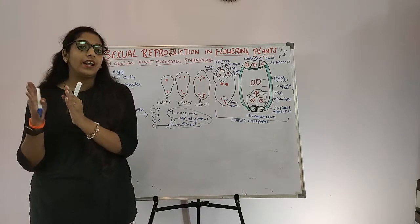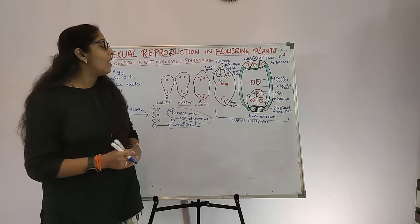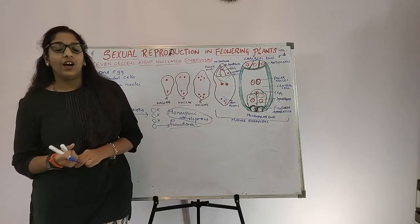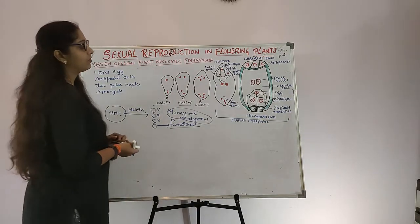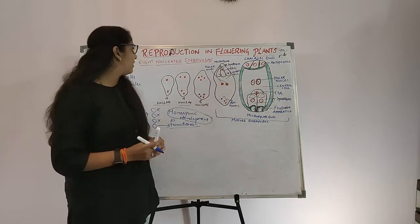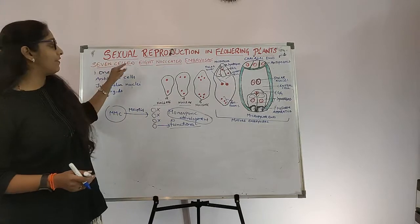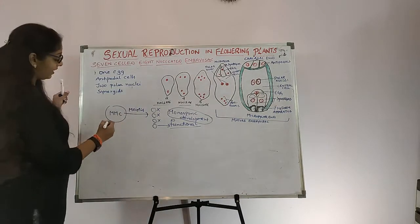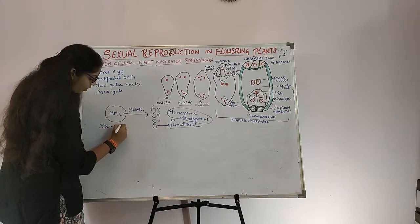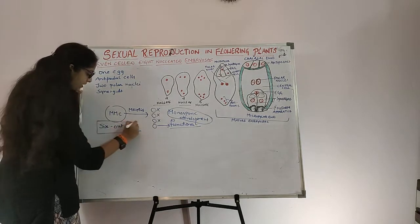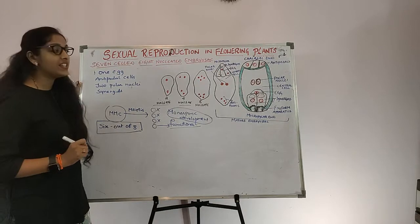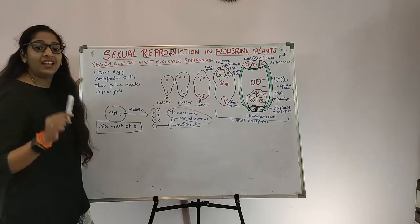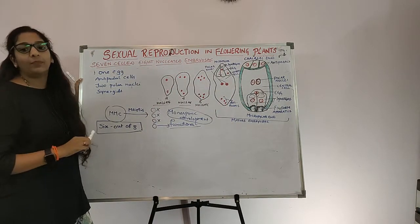This is how the mature embryo sac is formed. Now let us study its structure in detail. The embryo sac is 8-nucleate and 7-celled. Six out of the 8 cells are surrounded by a cell wall — you can count them: 1, 2, 3, 4, 5, 6. So 6 out of 8 nuclei are surrounded by cell walls.